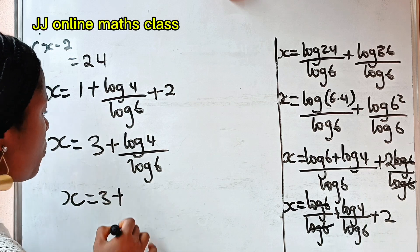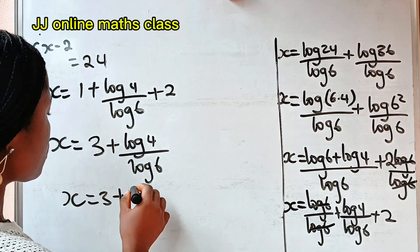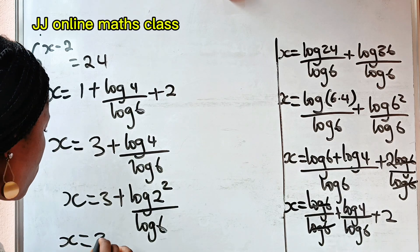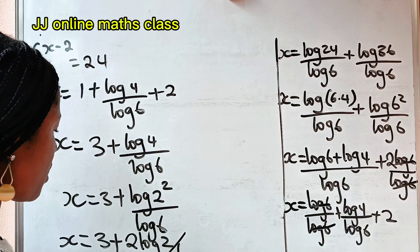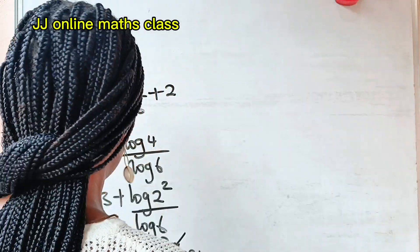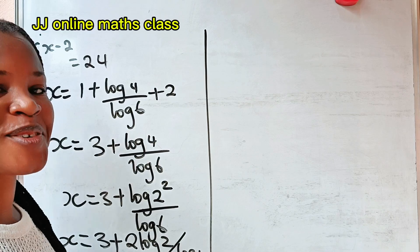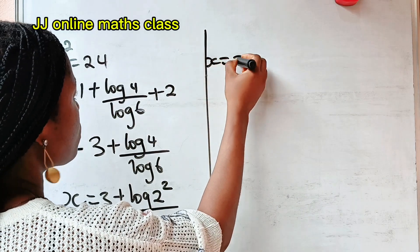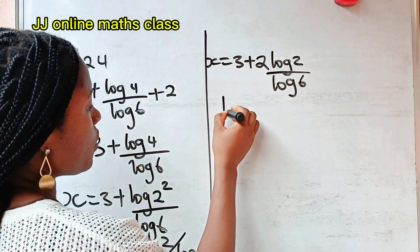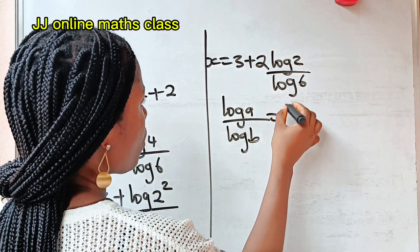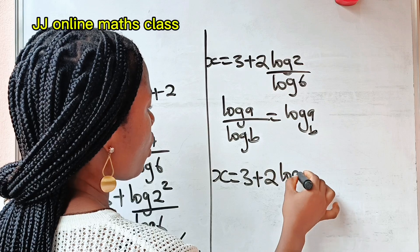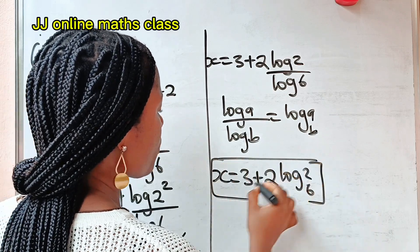So x is equal to 3 plus. Now remember that 4 is the same as 2 squared, so we have log of 2 squared divided by log 6. The exponent 2 comes down to give us 2 log 2 divided by log 6. So x is equal to 3 plus 2 log 2 divided by log 6. And recall that log A divided by log B is equal to log A base B. Therefore x is equal to 3 plus 2 log 2 base 6, and this is the value of x.